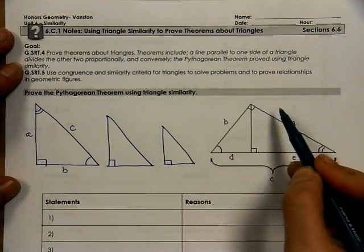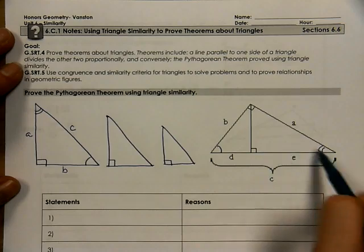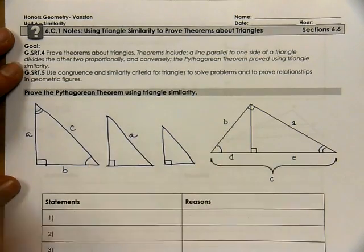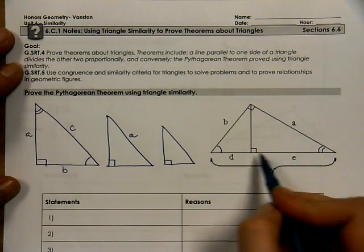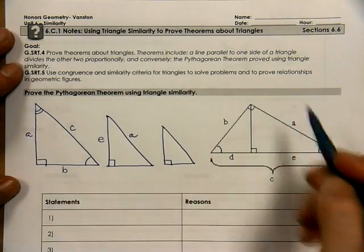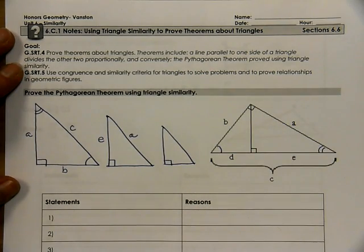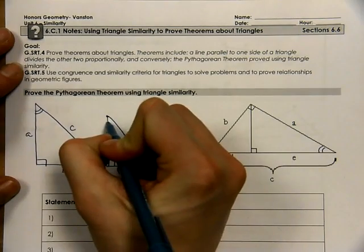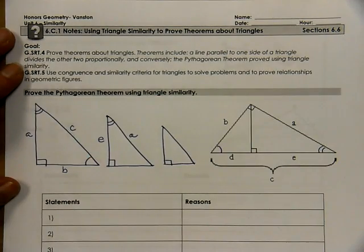So now if we look at the medium-sized triangle, we have the hypotenuse of the medium-sized triangle is A. The long leg would be E. And the shorter leg, we don't have anything for that, so we'll just skip that. If we look at the angle measures, this has a common angle there with the larger right triangle.